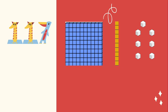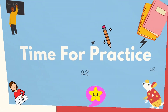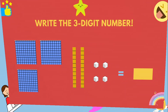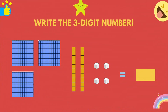It's time for practice now. Write the three digit number. Here you have one, two and three — three flats of hundreds. And one, two — two rods of tens. And one, two, three, four — four units of ones.